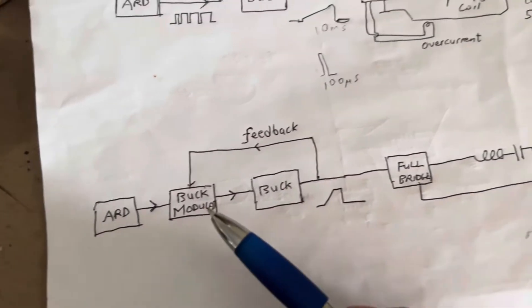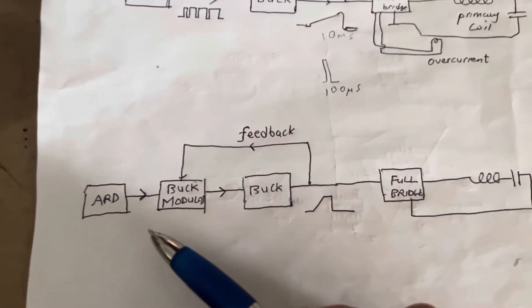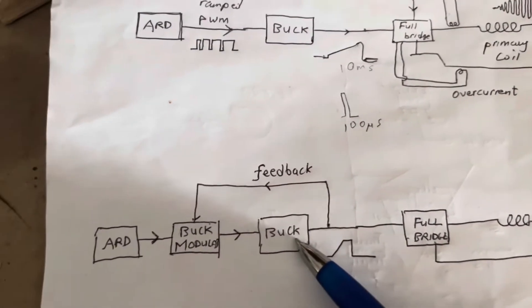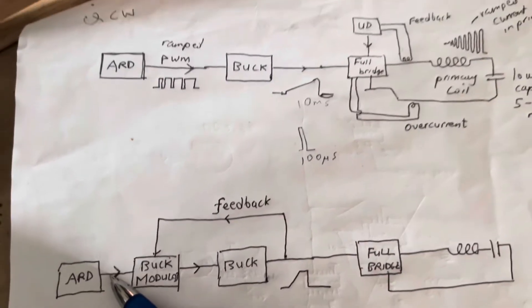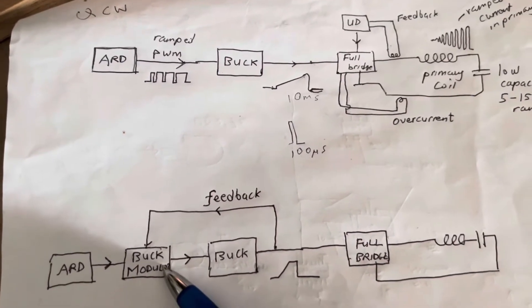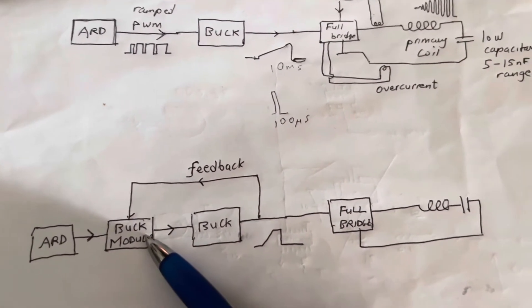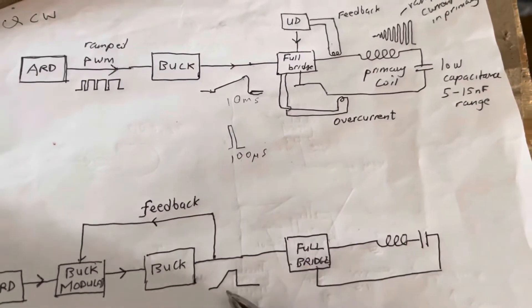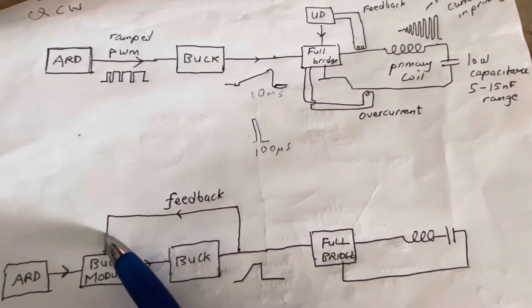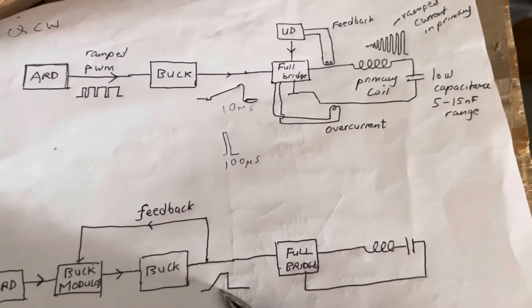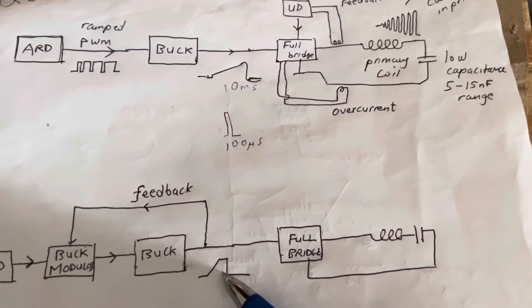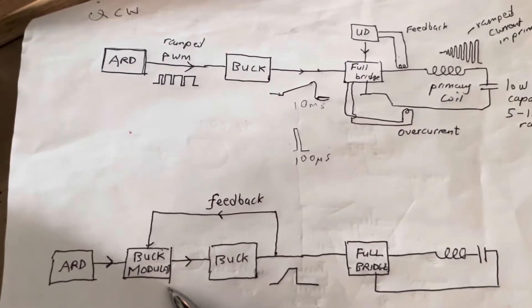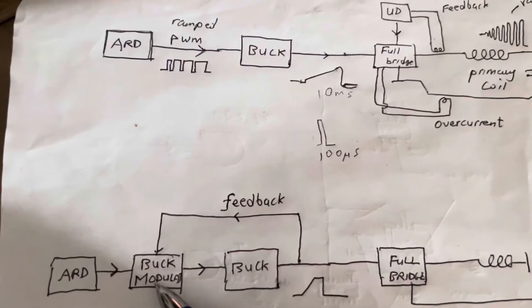This is the basic build. What this one does is it takes the signal from the Arduino and doesn't feed it directly to the buck, but instead feeds it through what's called a buck modulator, and that signal then goes to the buck. And the ramp signal is fed back into the buck modulator and it's modulated so that you have more control over the ramp.